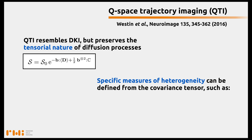From the covariance tensor you can define specific measures of heterogeneity. This covariance tensor, to be estimated reliably, requires multidimensional diffusion MRI.